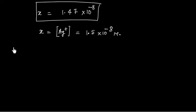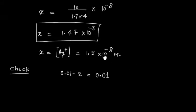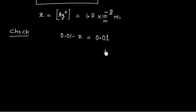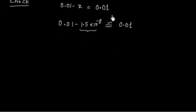We can verify the assumption: 0.01 − X ≈ 0.01. Since X is 1.5×10⁻⁸, subtracting this from 0.01 leaves the value essentially unchanged. So the assumption is valid.